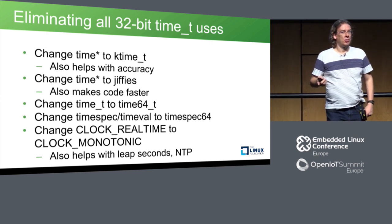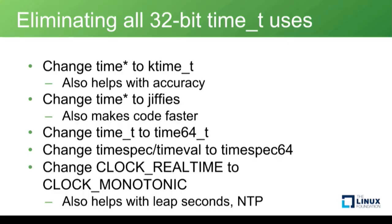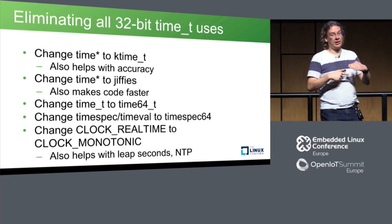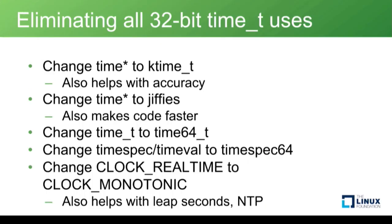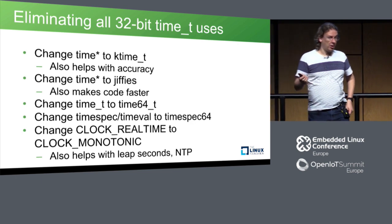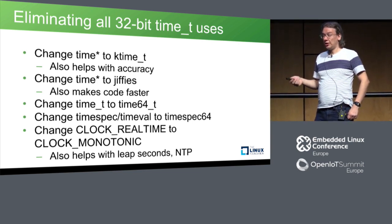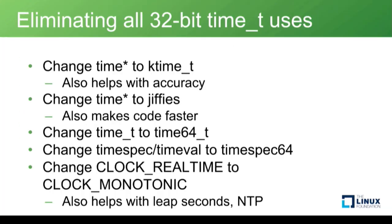Using jiffies is a very old method that simplifies a lot of code, is well understood, and doesn't suffer from the problems that time_t has. In some cases we have to use time64_t, simply converting timestamps to a wider type. We also got rid of all timeval usage inside the kernel and used timespec64, which uses 64-bit seconds plus nanoseconds. Another change was to switch many users from CLOCK_REALTIME to CLOCK_MONOTONIC.